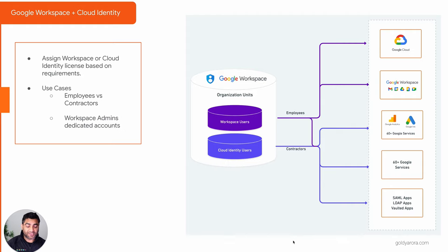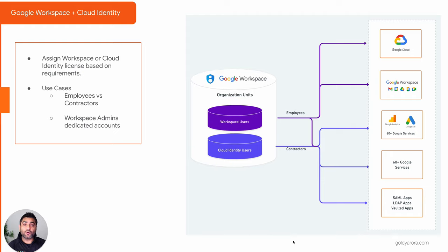One of the use cases is employees versus contractors. For example, some employees would be using email and collaboration on behalf of the organization, so it's okay to give them a Google Workspace license. But some contractors or temporary employees do not need access to email and collaboration — they only need access to Google Cloud Platform, Google Ads, or Google Analytics. It's not sensible to purchase a Google Workspace license for these users; I should go with a Google Cloud Identity license, which means paying much less. We'll talk about Google Cloud Identity pricing in a separate video.